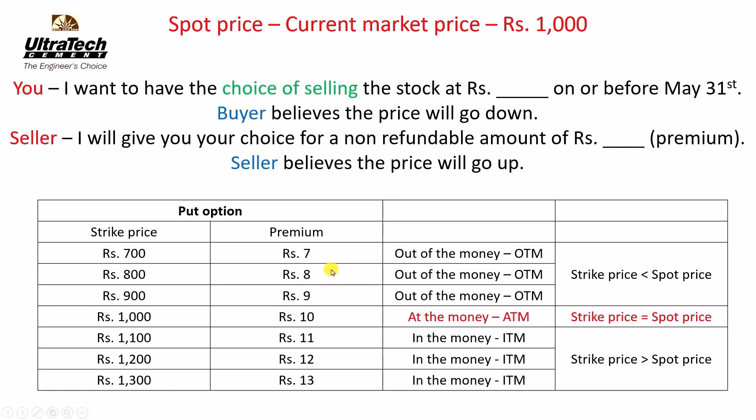We will learn about calculating premium in a different video. What we are seeing here can be noticed in an option chain — option chain gives you data of strike price, premium, volume traded, open interest, and so on. Just know that in put option, as the strike price increases, the premium increases — which is opposite to that of call option. I hope it is clear. I will see you in the next video. Till then, take care and thank you for watching.